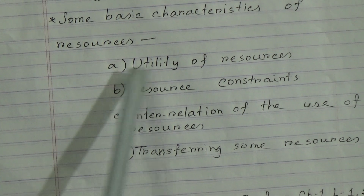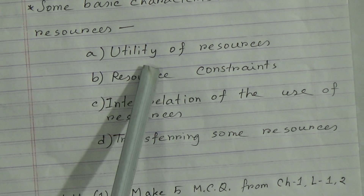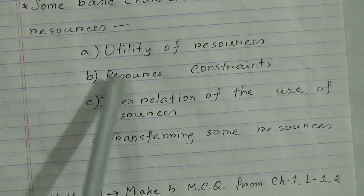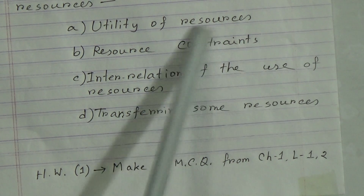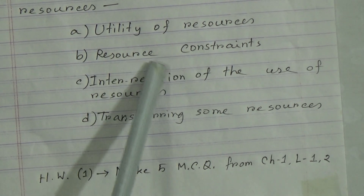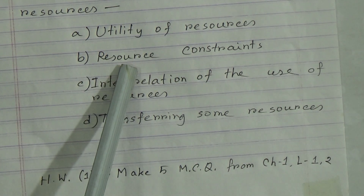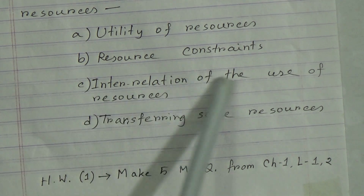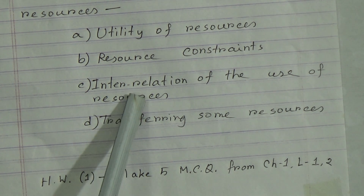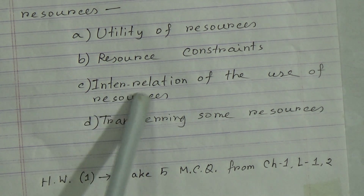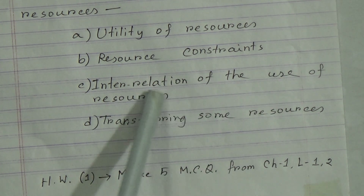Now let's look at some basic characteristics of resources. Characteristic A is utility — resources have utility, meaning we can use them to reach our goals. Characteristic B is resource constraints — resources are not unlimited; they have limits and can be finished. Characteristic C is interrelation — resources are interdependent and interrelated, just as we learned in the previous lesson, and their uses must work simultaneously to reach goals.